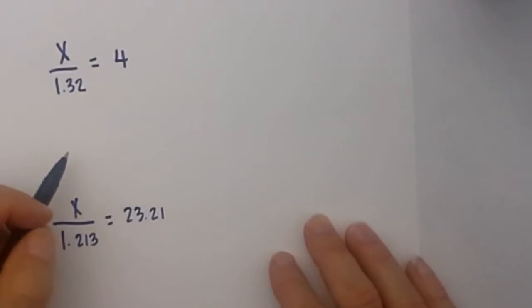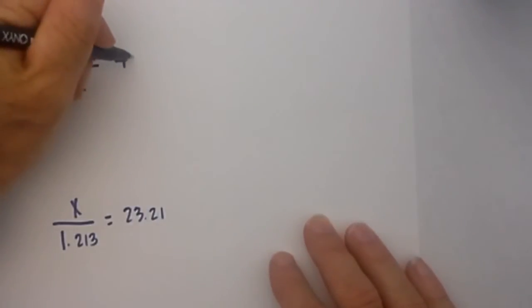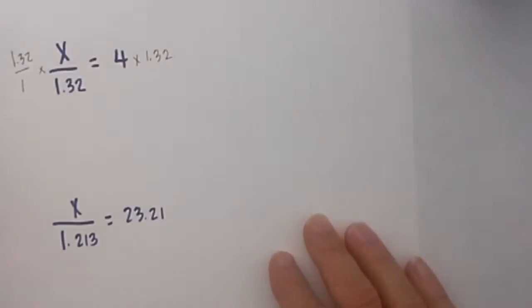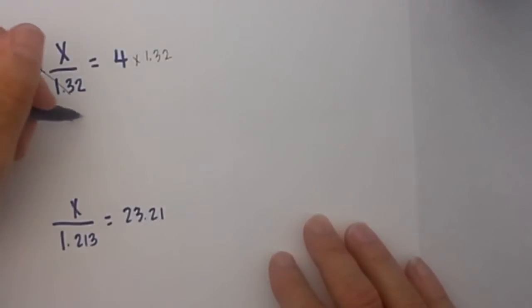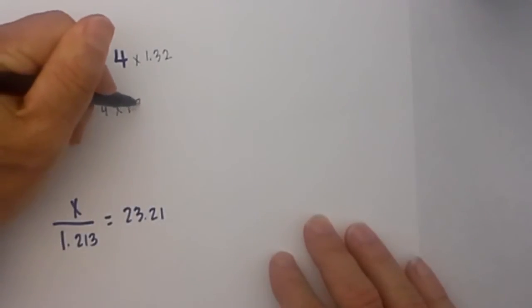In this first problem we need to isolate the x, and since it is a division problem we will isolate by multiplying. We can multiply 1.32 over 1, and what we multiply on one side of the equation we will on the other side, so we will multiply 4 times 1.32. These cancel and we are left with x equals 4 times 1.32.